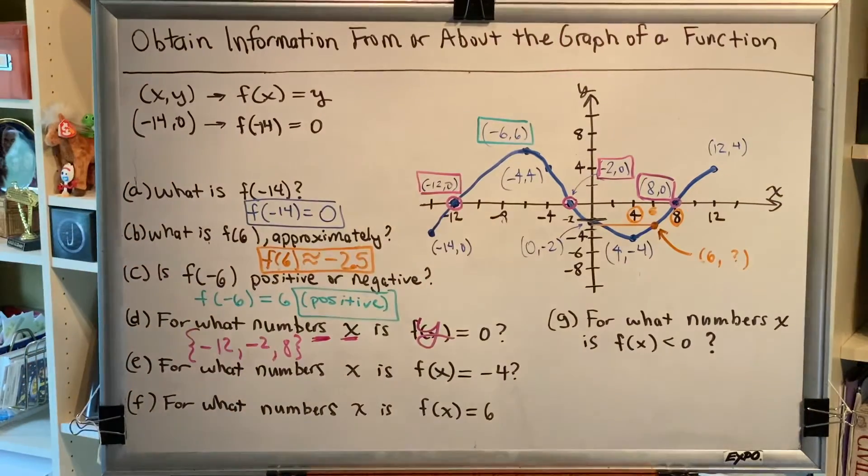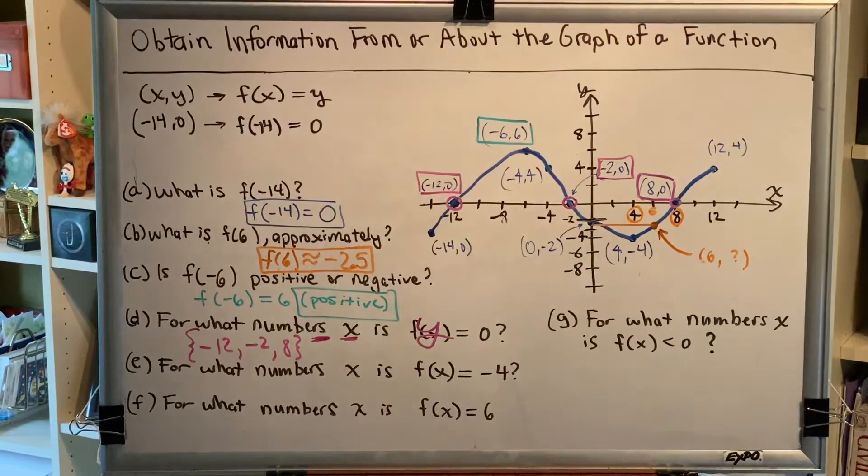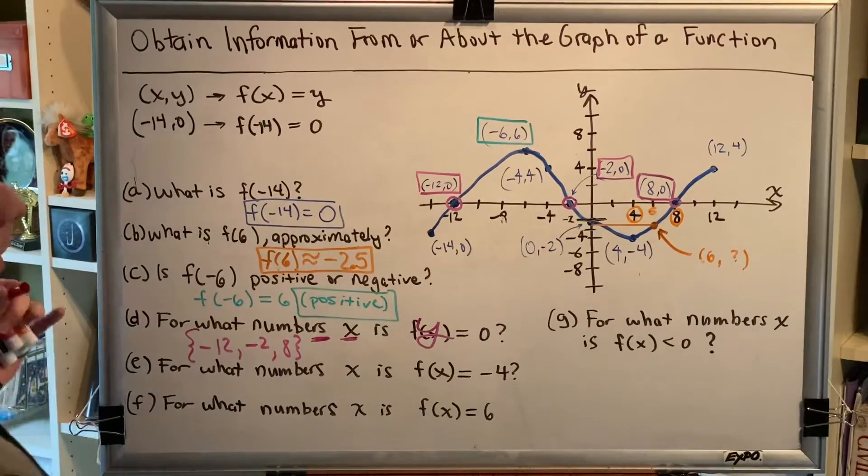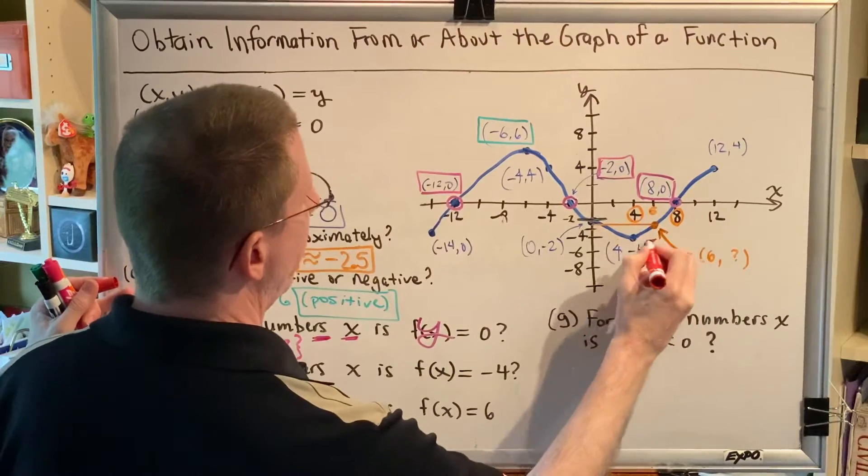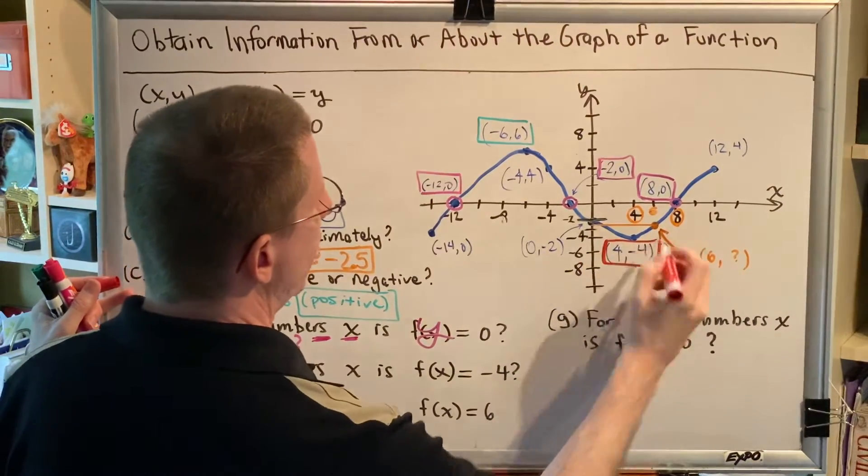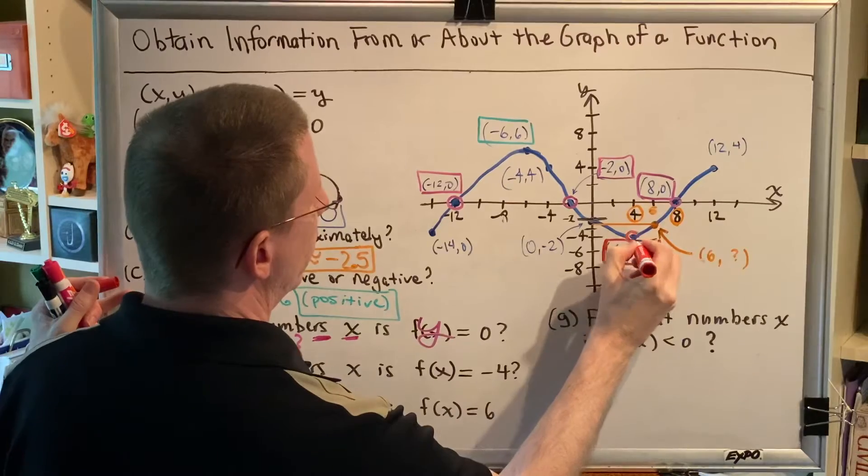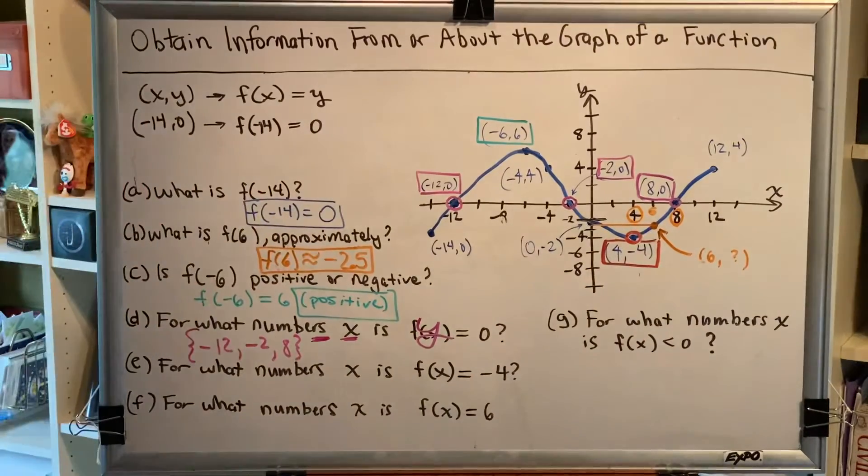For what numbers x is f(x) equal to negative 4? Okay, so now we're looking for the points on the graph that have a y value of negative 4. Let's see if we can find such points. Well, I see one here: (4, -4). So this is a point that has that property.